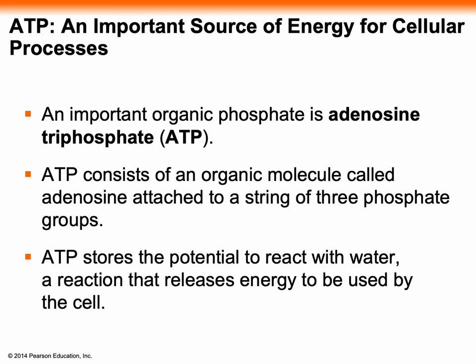ATP — adenosine triphosphate — is very important because it is the energy molecule in the body. When we look at cellular respiration, the forming of ATP and the breaking down of ATP to ADP will be extremely important and you will need to know the chemistry of it. ATP consists of an organic molecule — carbons and hydrogens — called adenosine, attached to a string of three phosphate groups. ATP stores the potential to react with water, a reaction that releases energy to be used by the cell. So ATP reacts with water to release energy and become ADP, which can then be recycled in the body.